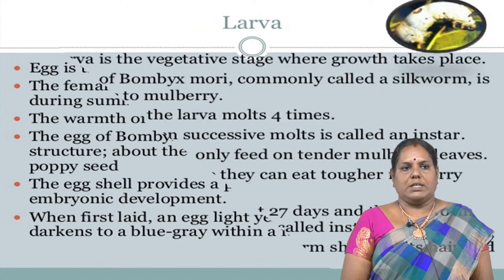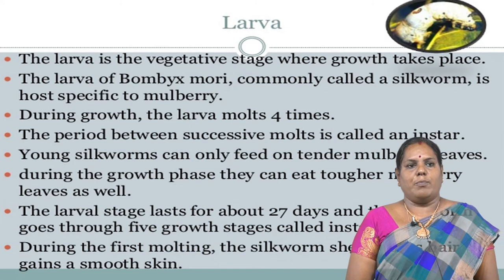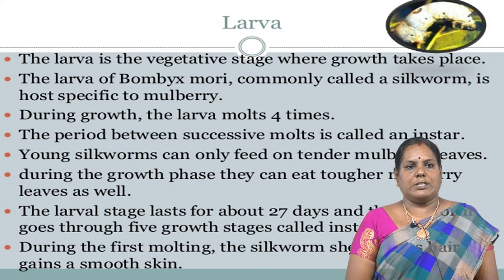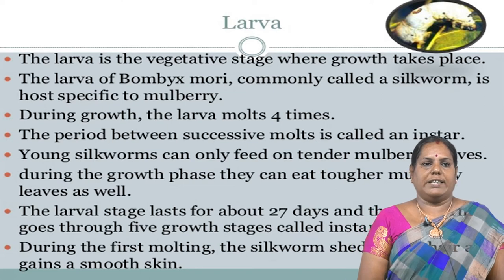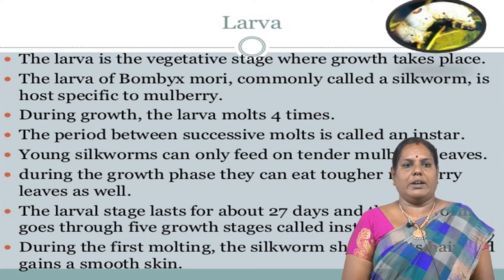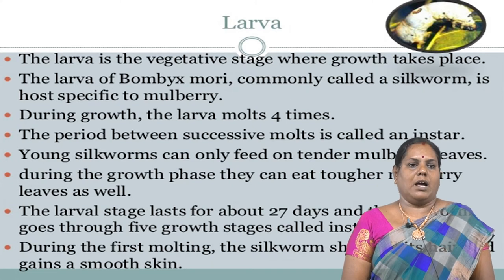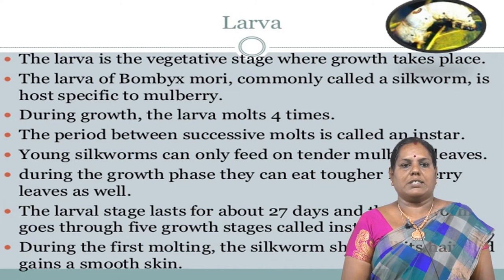The larva is the vegetative stage where growth takes place. The larva of Bombyx mori, commonly called a silkworm, is specific to mulberry. During growth, the larva molts four times. The period between successive molts is called an instar. Young silkworms can only feed on tender mulberry leaves, but during the growth phase they can eat tougher mulberry leaves as well. The larva stage lasts about 27 days and the silkworm goes through five growth stages called instars.